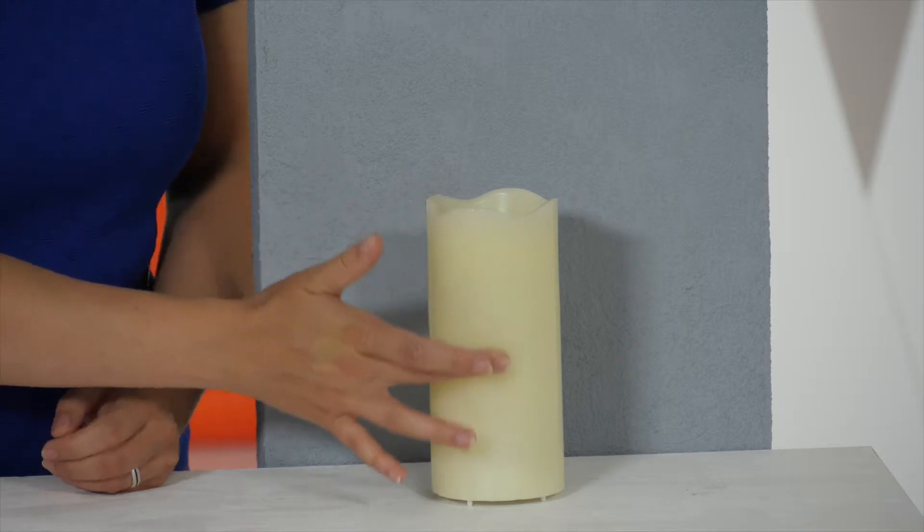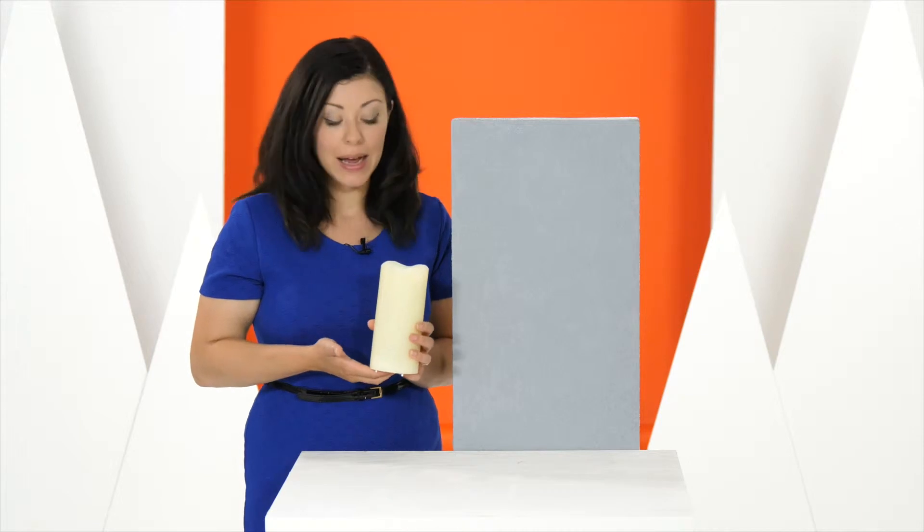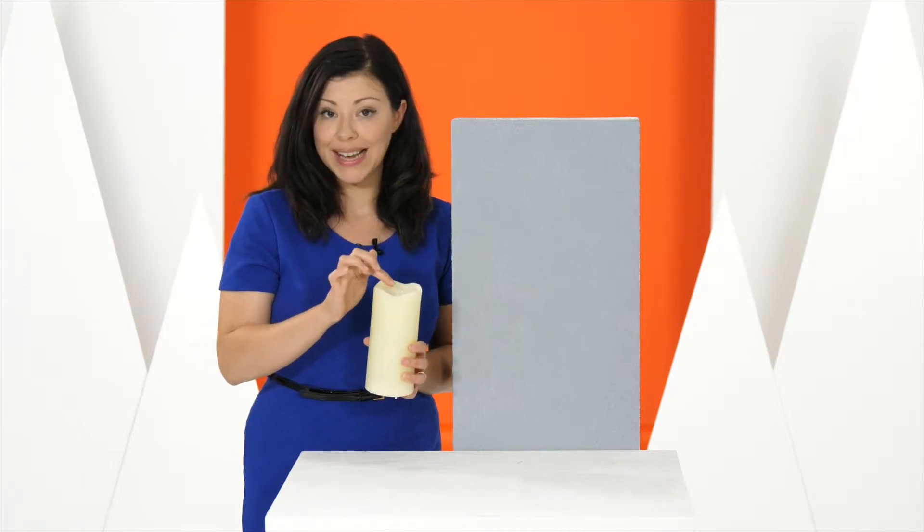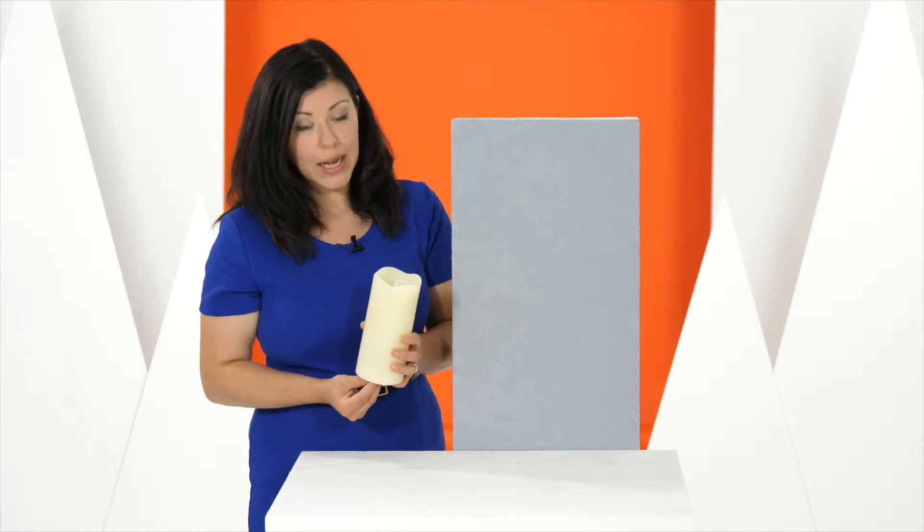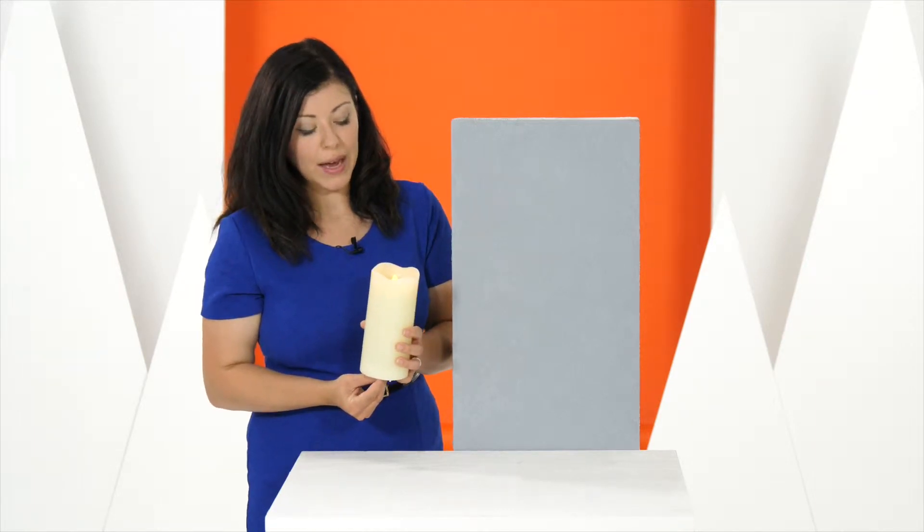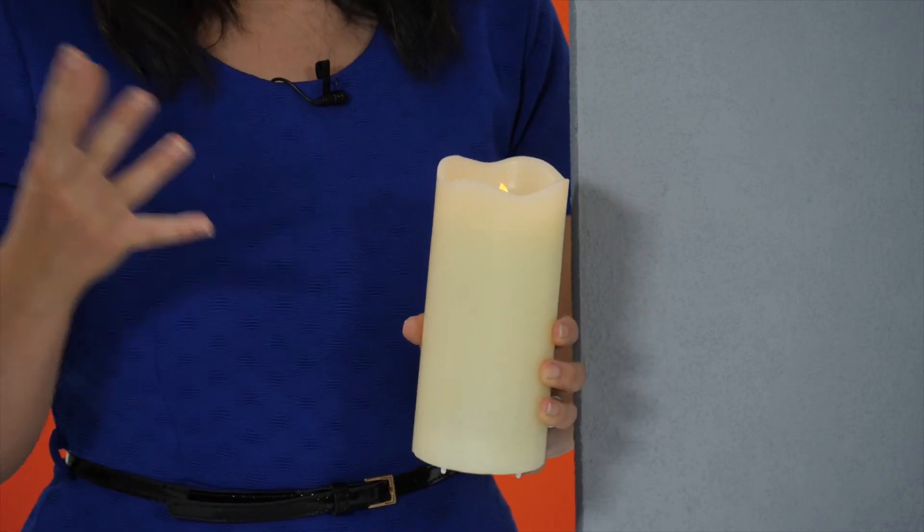It's made from wax as a real candle would be but there's a section at the bottom where you have a battery pack and also you have a light at the top which of course is LED. So if you want to have a natural candle effect you simply flick the switch and the light itself has a flickering motion.